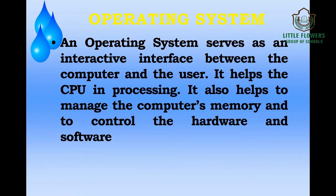Windows 7 is an operating system. An operating system serves as an interactive interface between the computer and the user — it is the link between the computer and the user. It helps the CPU in processing, helps to manage the computer's memory, and controls the hardware and software. So an operating system manages all the hardware attached to the computer and all the software installed in the computer. Everything is processed with the help of the CPU, and the operating system manages all these things.